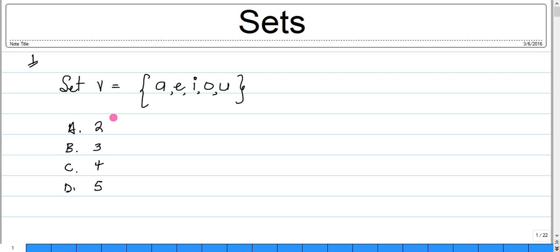Number one: how many elements are in set V? Another term for elements would be members. Set V has a, e, i, o, u — one, two, three, four, five elements. This corresponds with answer D: the set of vowels. There are five vowels, so our answer for number one is five.